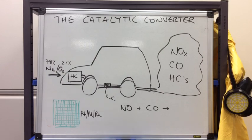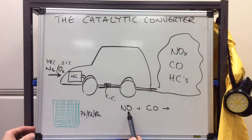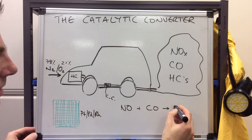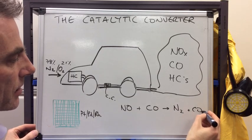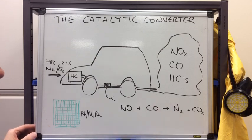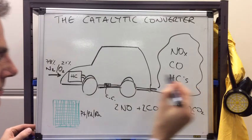Dealing with the first two pollutants — nitrogen oxide and carbon monoxide — inside the catalyst these two are encouraged to react with each other. The products are nitrogen (N₂), which is harmless, and carbon dioxide (CO₂). CO₂ is a greenhouse gas but far less damaging than carbon monoxide building up in the atmosphere. The balanced equation is: 2NO + 2CO → N₂ + 2CO₂.